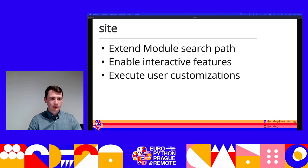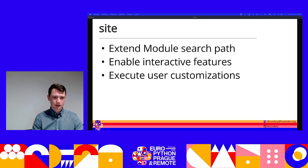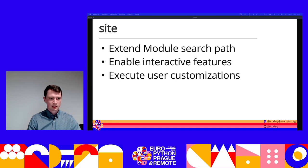The customization of Python as it starts up is done by a module called site. It's part of the standard library, and when you import site, it does these things: it extends your module search path — that is sys.path — enables some interactive features for when you're using the interactive Python shell, and it also executes further user customizations, basically letting you run arbitrary code to further customize Python.